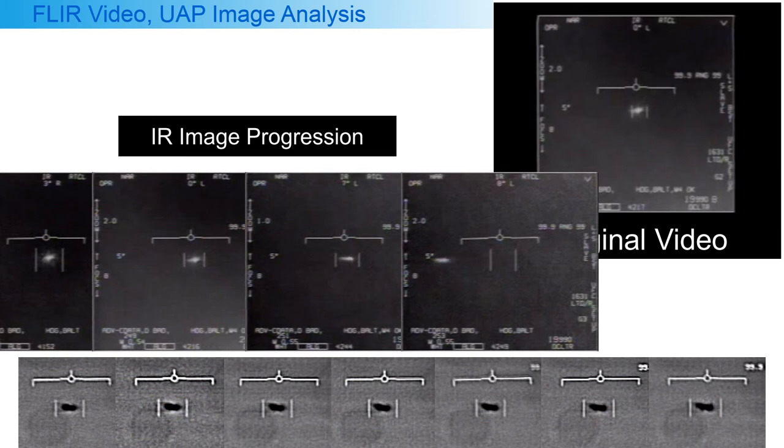The last image is right at the end of the video when the object is moving off the screen, so it might be blurred because of motion. But the third image here is still a steady locked image and has a definite elongated shape.